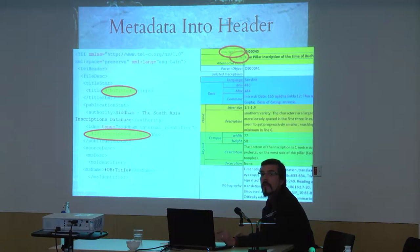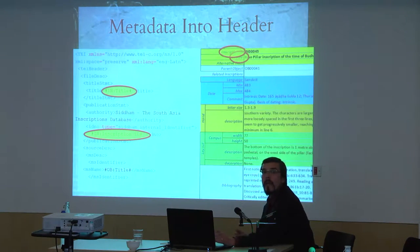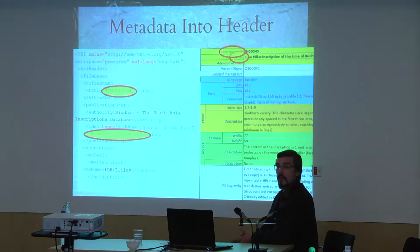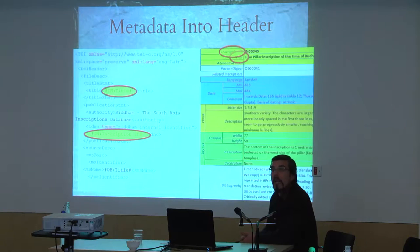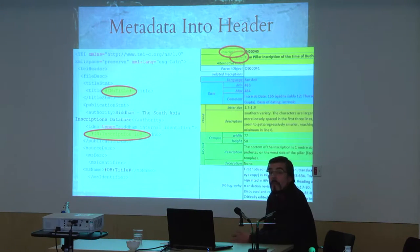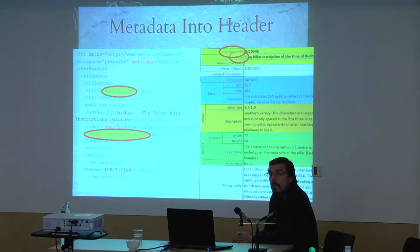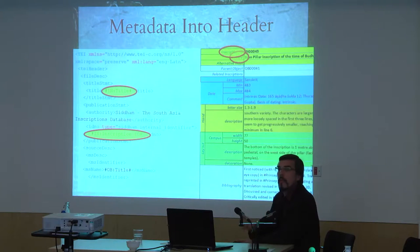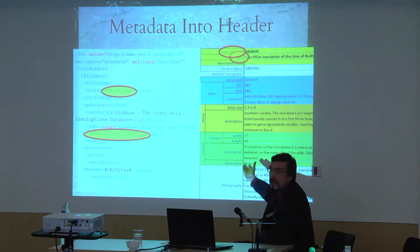The ID numbers are key to keeping track of all the work. We use IN for inscription numbers and OB for object numbers, with five digits. These are stable, arbitrary identifiers — the inscription number doesn't need to tell you anything about the inscription, and the object number doesn't need to tell you anything about the object. The metadata do that. The ID is just an ID.